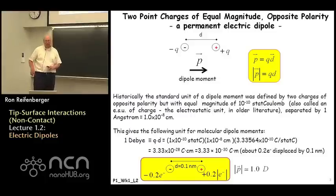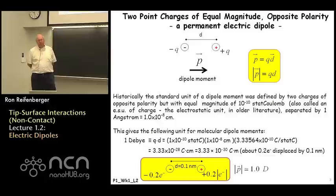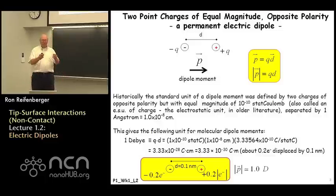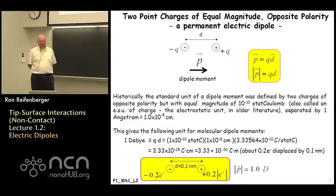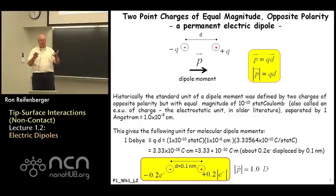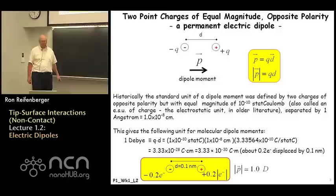Let's very quickly review the definition of a dipole moment — a concept that you should have discussed in your introductory physics class. The basic idea is if you have two charges, a plus Q and a minus Q, separated by a distance D, then we say a dipole moment develops. This dipole moment is given the symbol P, it is a vector, and its magnitude is just the product of the charge Q times the distance D, so |P| = Q × D.